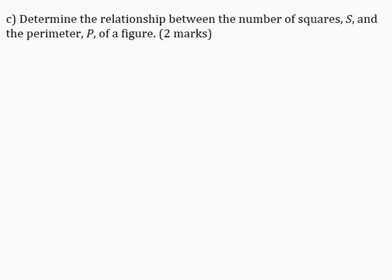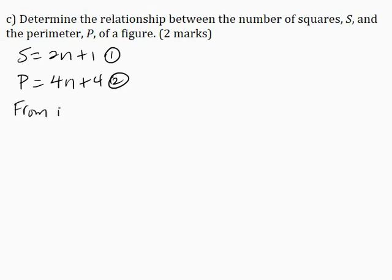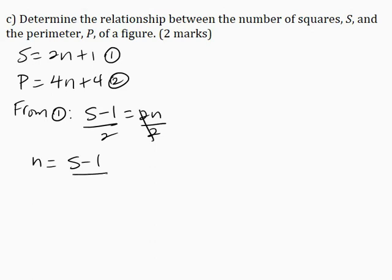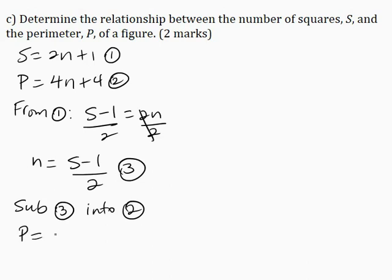Part C: Determine the relationship between the number of squares S and the perimeter P of a figure for 2 marks. I will write the two formulas I derived: S = 2N + 1 (equation 1) and P = 4N + 4 (equation 2). I want to make N the subject of the formula in equation 1. From equation 1, S − 1 = 2N. Dividing both sides by 2: N = (S − 1) / 2, and I'll call this equation 3. I will now substitute equation 3 into equation 2.